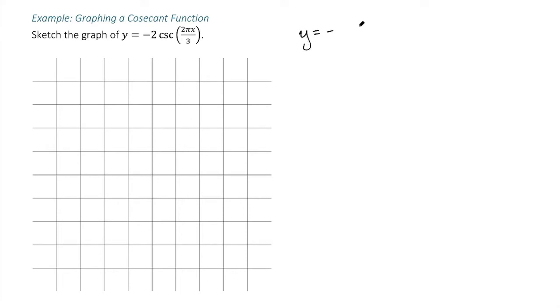We'll look at y equals negative 2 sine of 2 pi x over 3. We can find the period here by doing 2 pi divided by the number in front of the x, which is 2 pi over 3. So our period here is 3.